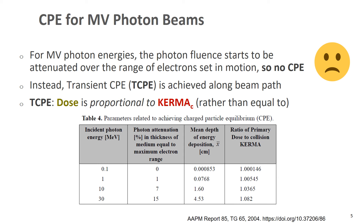However, we do have a situation called transient CPE, or TCPE, along the beam path. In TCPE, dose is proportional to collision kerma rather than equal to it. This table, taken from AAPM Report 85, shows for each incident photon energy — 100 keV, 1 MeV, 10 MeV, and 30 MeV — the percent of photons attenuated over the maximum electron range.